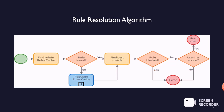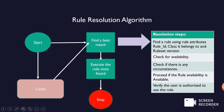Now let's discuss what Rule Resolution Algorithm actually is. It is the algorithm used by Pega PRPC when you search for or refer to any rule at runtime. When a rule is referred at runtime, Pega PRPC first searches the rule in cache using rule ID, class, and rule circumstances. If not found in cache, it goes to the rule database — the rule base — and tries to find the best match using those same three parameters: rule ID, class, and rule circumstances.